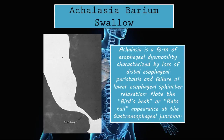Achalasia on barium swallow. Achalasia is a form of esophageal dysmotility characterized by loss of distal esophageal peristalsis and failure of the lower esophageal sphincter to relax. Note the bird's beak or rat's tail appearance at the gastroesophageal junction. As discussed, the peristalsis in the lower part of the esophagus is lost and there is a failure of the lower esophageal sphincter — also known as the LES or gastroesophageal junction (GEJ) — to relax.